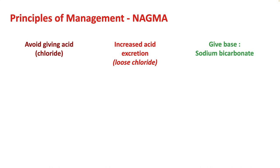To manage your non-anion gap metabolic acidosis, you can do three things. First, avoid giving acid. Second, you can increase acid excretion. And lastly, you can give base like sodium bicarb.